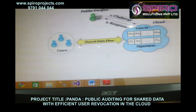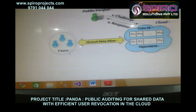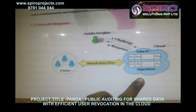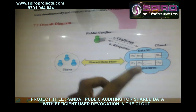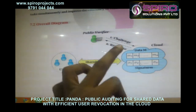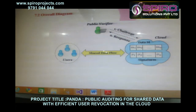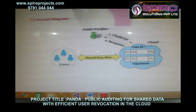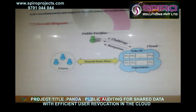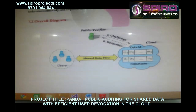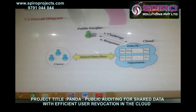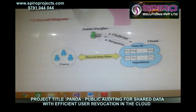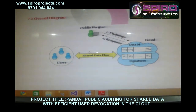Let's look at our overall diagram. Users share data with signatures, and these signatures are verified by the public verifier. The public verifier maintains and checks all the keys. Before a user joins, the admin allocates a key generation to that particular user. Based on the key generation, the user receives a private key and a public key. So this is the overall diagram of our project.